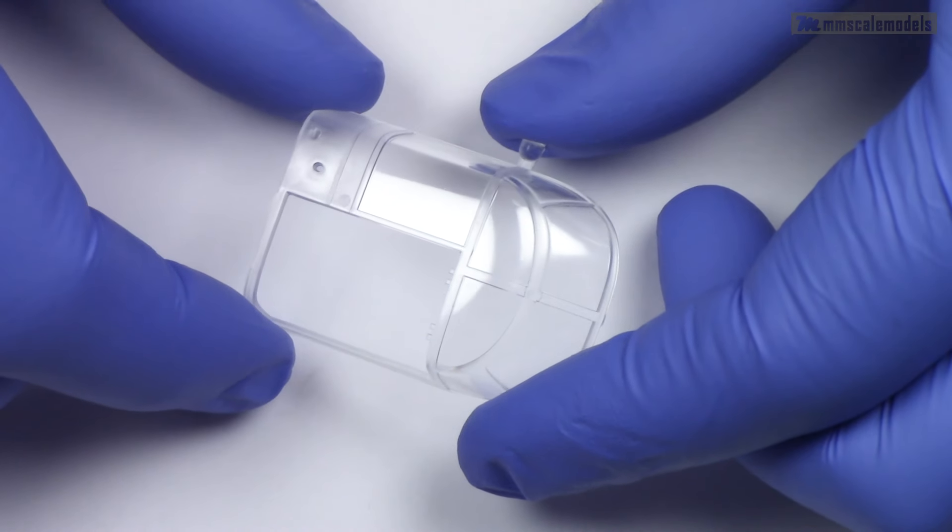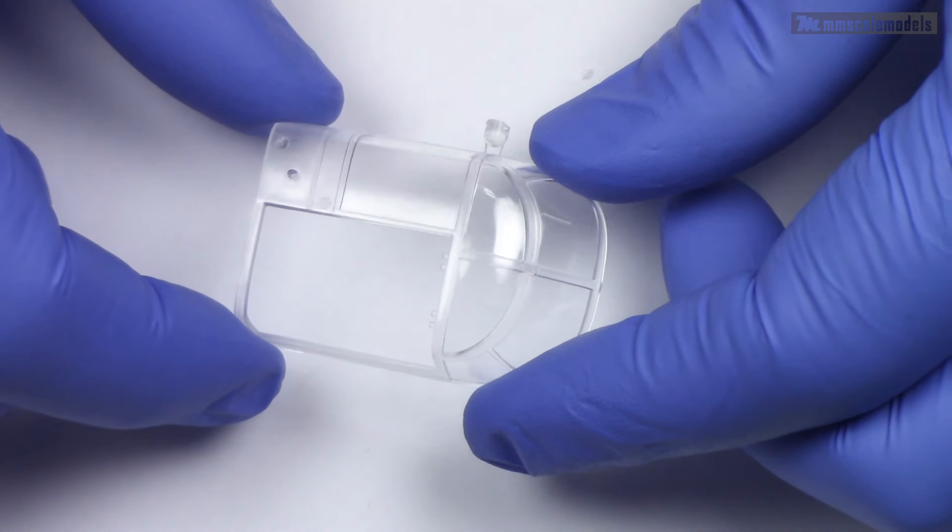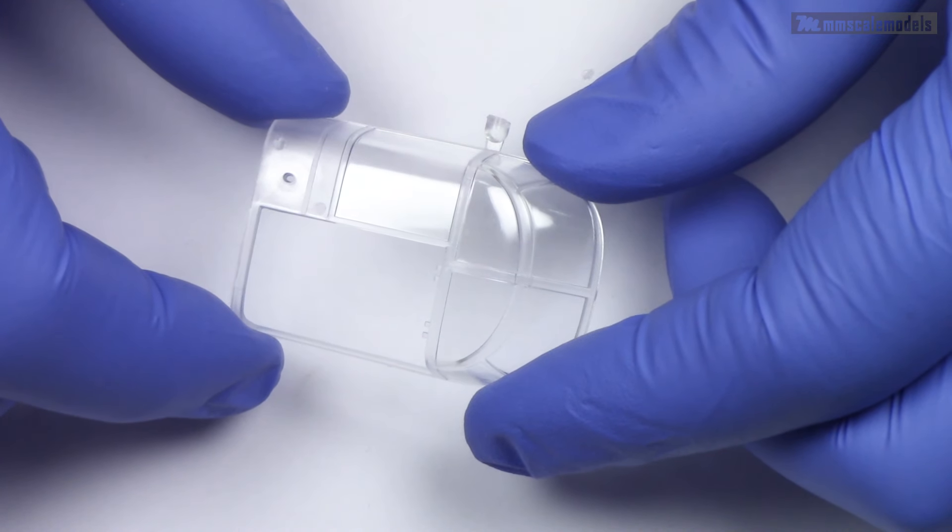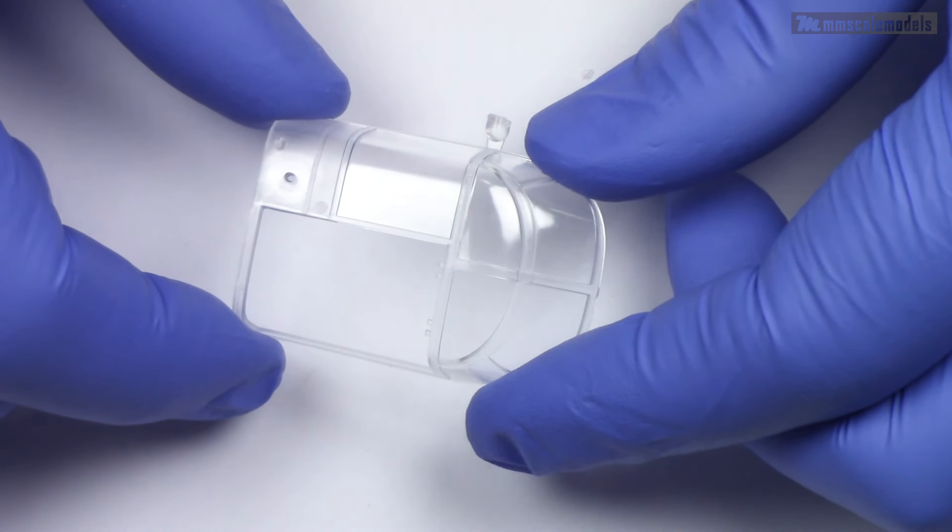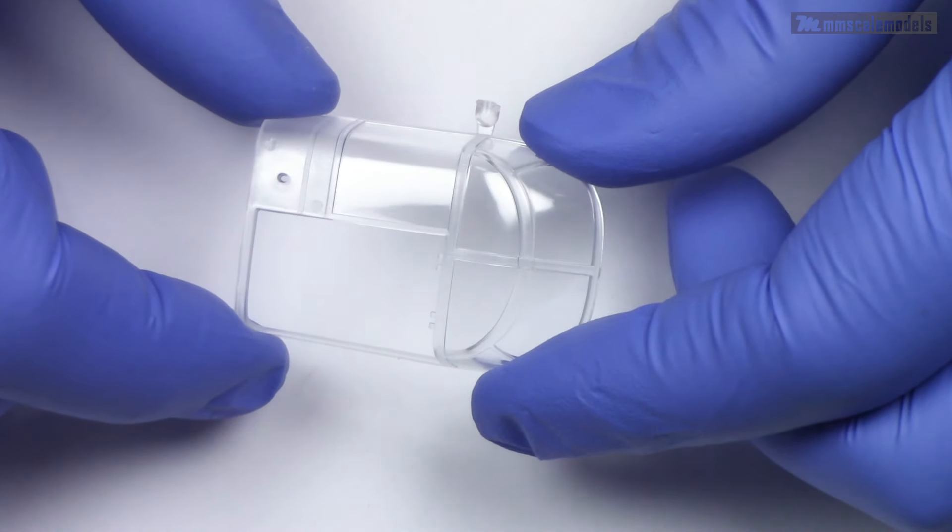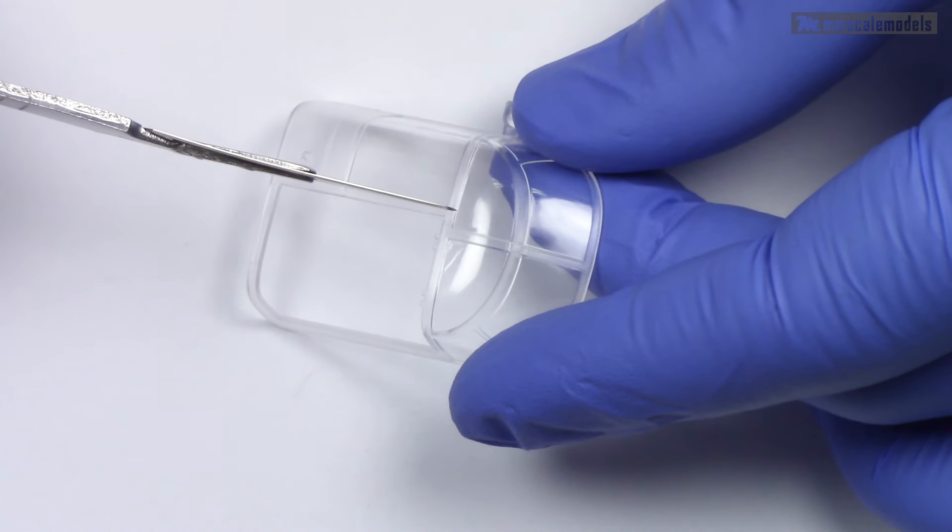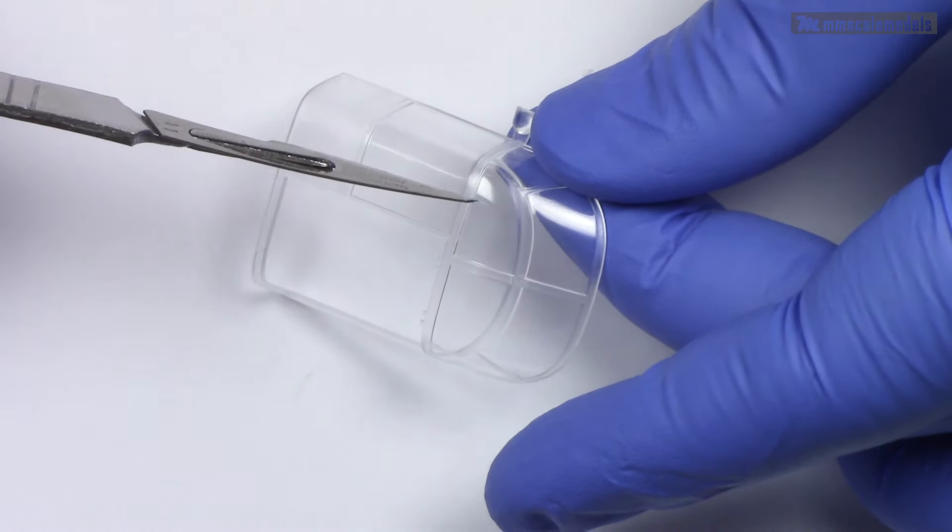This is the most fragile and delicate part of your scale model. On top of that, it is very hard to replace. And still, in my previous canopy masking tutorials, many people commented that the best and easiest way to mask your canopy is to directly cut the masking tape on the plastic.